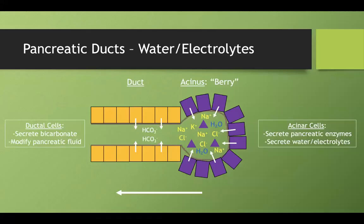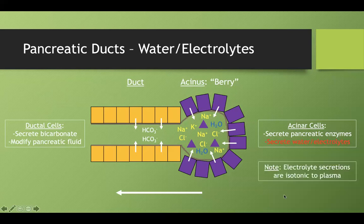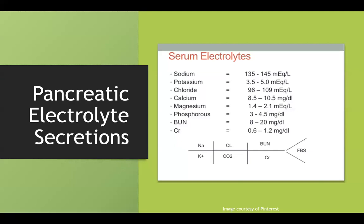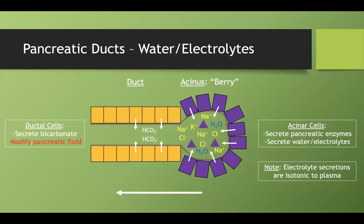Acinar cells secrete water and electrolytes that are isotonic to plasma — meaning roughly the same concentration of each electrolyte as in blood. There's more sodium than other ions, similar to plasma. Further distal in the main pancreatic duct, the concentration of electrolytes may be modified. Ductal cells can modify pancreatic fluid, so let's discuss pancreatic fluid modification.